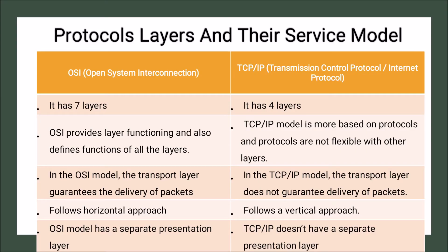In the OSI model there are a total of seven layers, as we already know, while in TCP/IP there are only four layers.